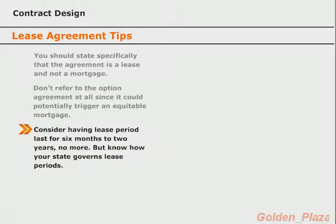Another tip to consider is specifying that the lease term be somewhere between six months to two years long. Some states have laws that are very particular about lease options and equitable title, so for some states you should keep your lease less than six months. For those that don't control lease options so strictly, you may consider extending the lease at least two years in order to better take advantage of the monthly cash flow and have the flexibility to adjust rent amounts to changing market conditions if need be.